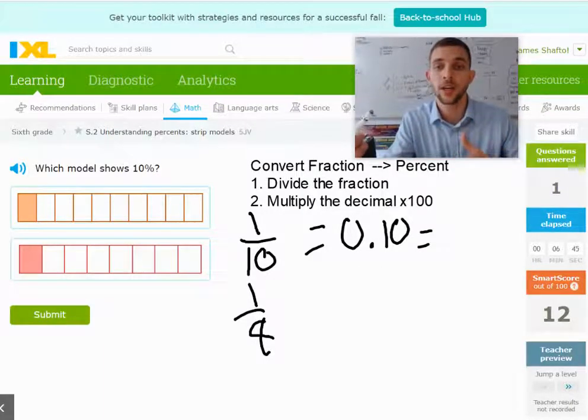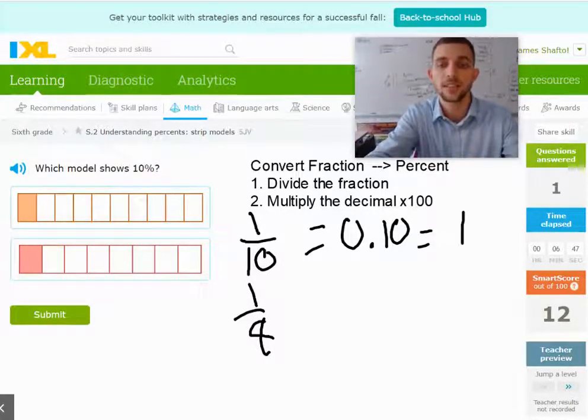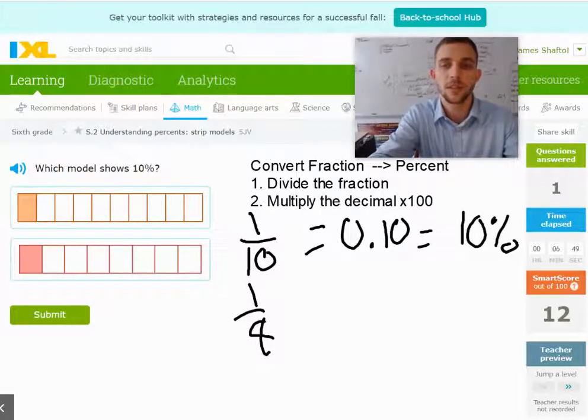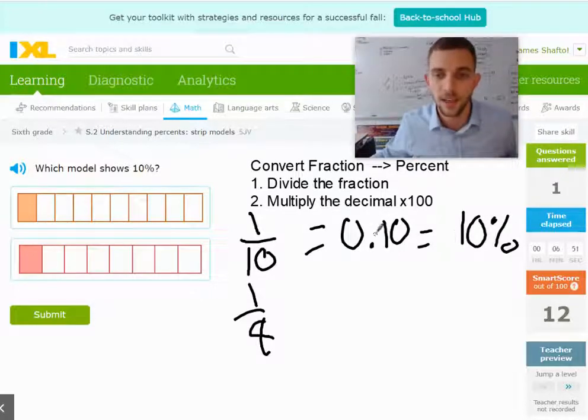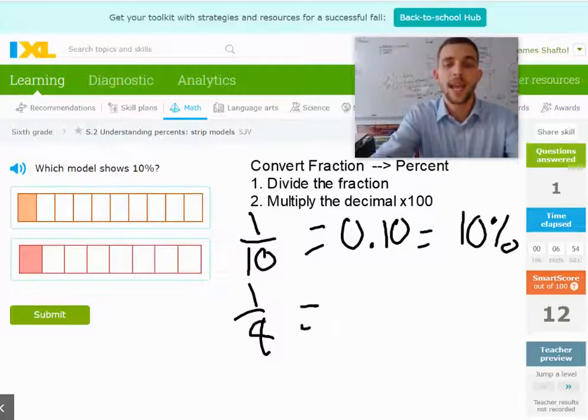And if we multiply times 100, step two, we get 10 percent, because this is 10 hundredths. If we took 1 eighth, then you took 1 divided by 8,